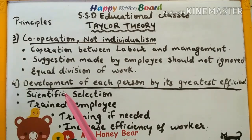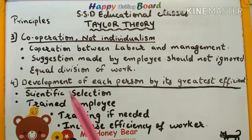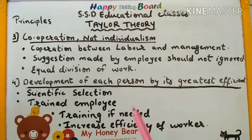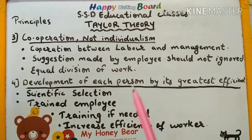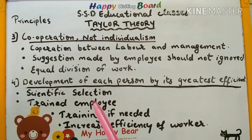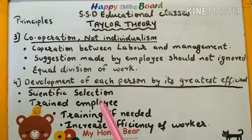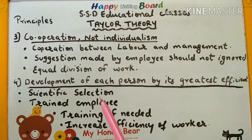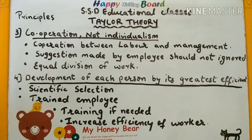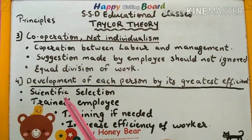The fourth principle is the development of each person to their greatest efficiency. If we develop every person in the organization, the employees will achieve their own development. This requires scientific selection — we must assess employees mentally, physically, and intellectually to ensure the right person is placed in the right job. Employees should be selected through interviews and different scientific selection processes.